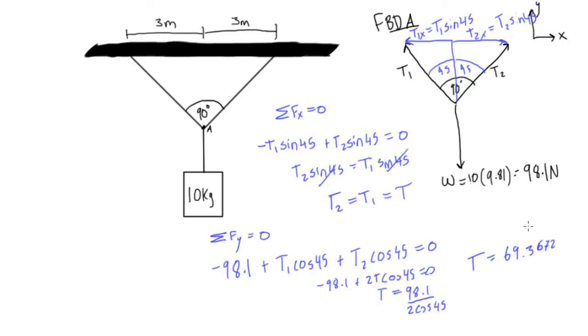Which is also equal to t1 equals t2. So the tension in this rope is 69.3672 newtons, should probably write the units, and the tension in this rope is also 69.3672 newtons.